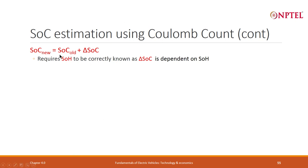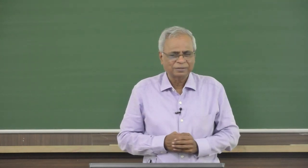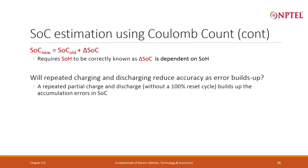This delta SOC depends on SOH. You need to know the initial capacity plus SOH. The question is therefore: how do you know what SOH is? With repeated charging and discharging, this delta SOC is a little problematic — you may make small errors and the error will keep building up. If you are careless and keep using this formula, SOC_new may be very different from the actual SOC.